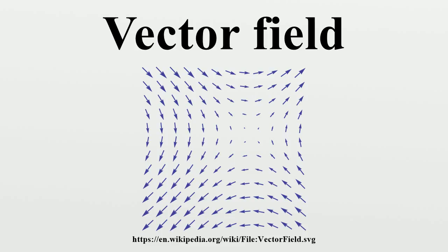They are: streak lines, as revealed in wind tunnels using smoke; streamlines, as a line depicting the instantaneous field at a given time; and path lines showing the path that a given particle would follow.